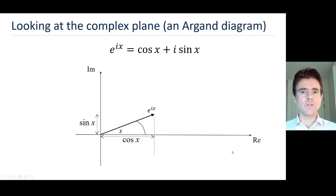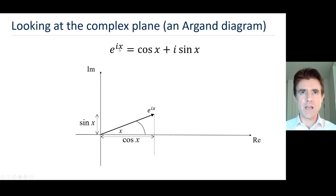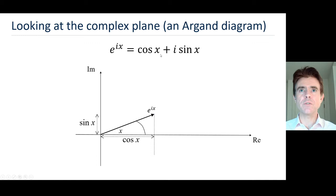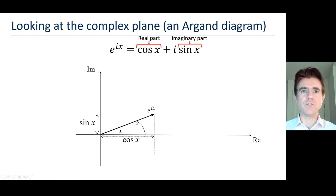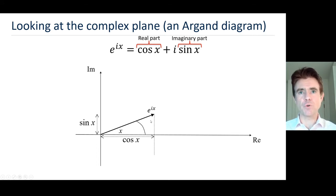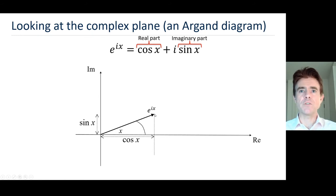Let's take a look at the complex plane, or Argand diagram, to see what's happening for both cosine and sine. We have the real axis going horizontally and the imaginary axis going vertically. If we take e to the ix, that's plotted as a line — often called a phasor — representing a point in the complex plane. The real part is cos x along the real axis, and then we go up a distance sine x for the imaginary part. We draw a line from the origin to that point, like a vector, plotting the complex number e to the ix.